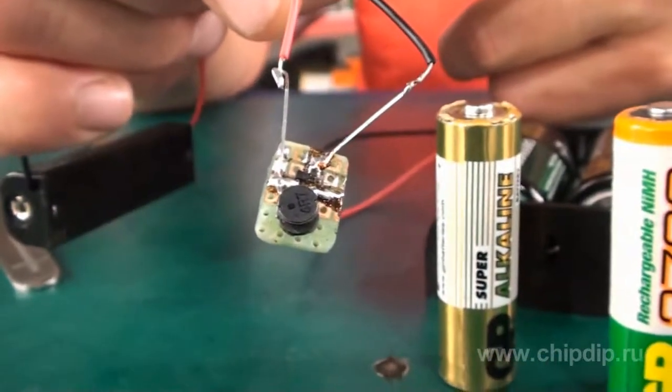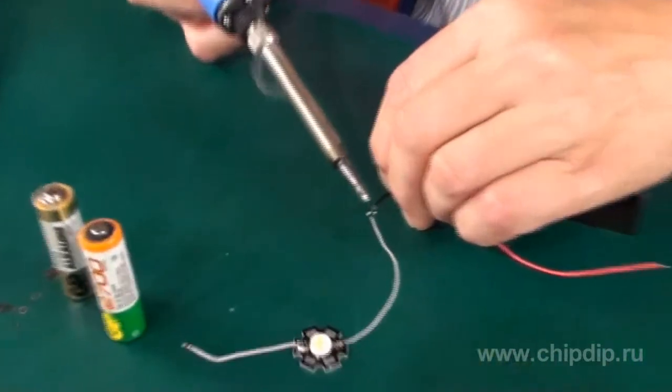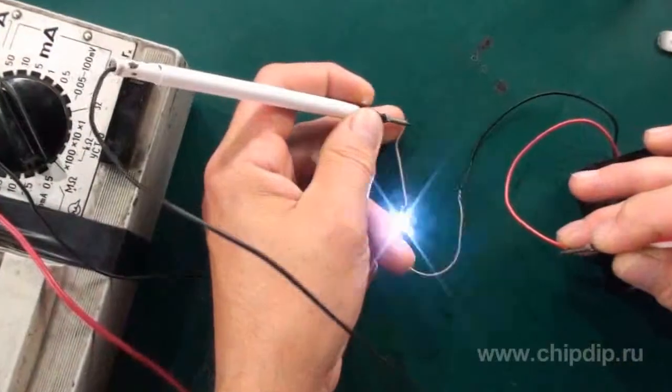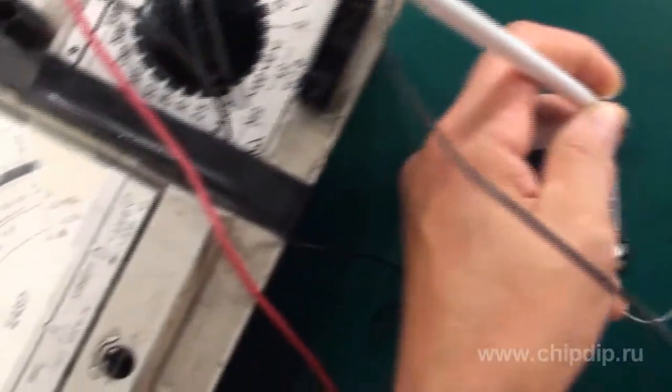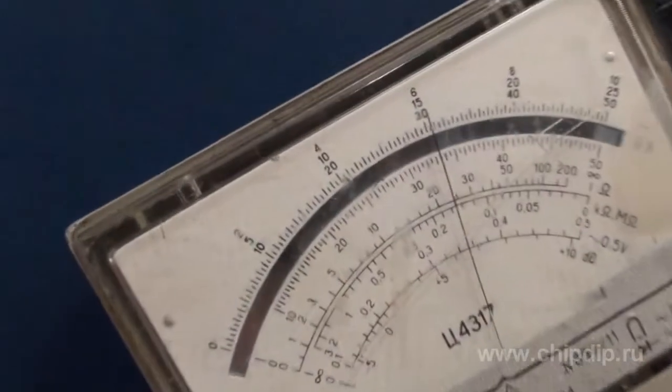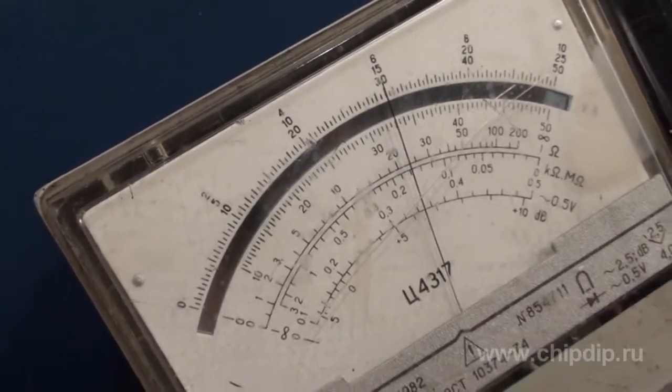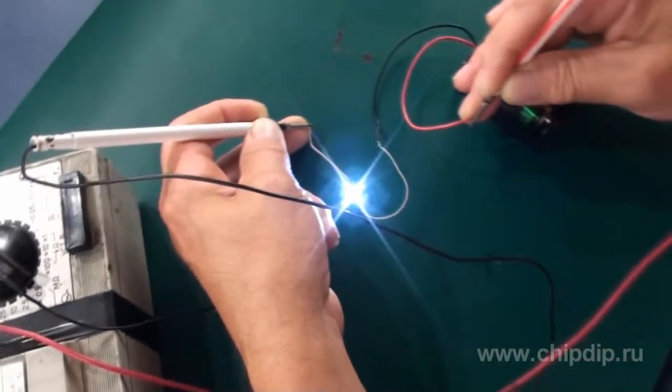Let's connect the two batteries with a total voltage of 3 volts to the LED and measure the consumption current. It will constitute 140 mAh, which is approximately 0.34 of the rated value.